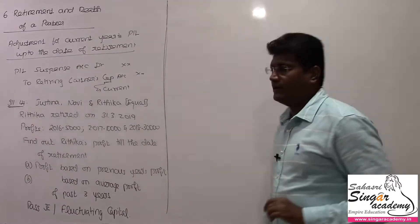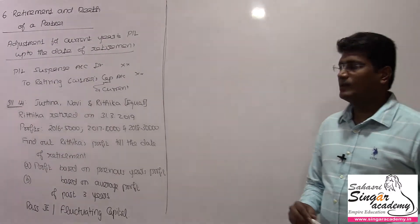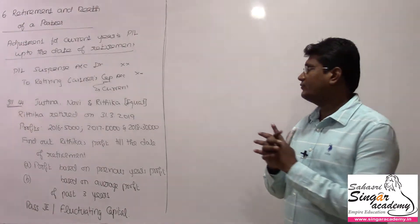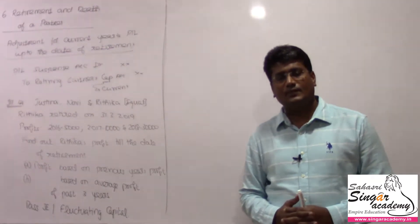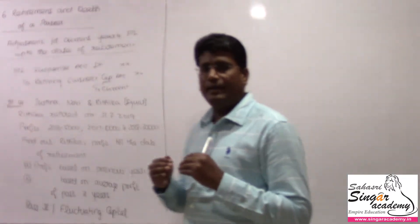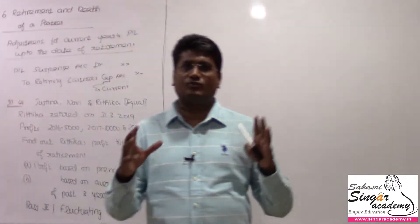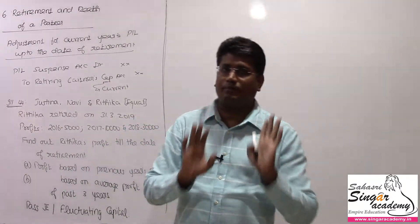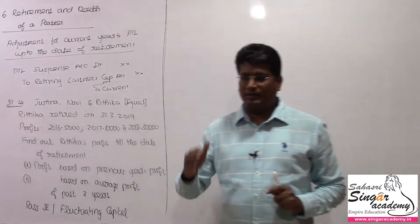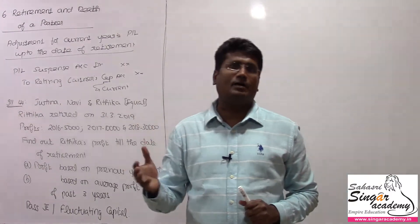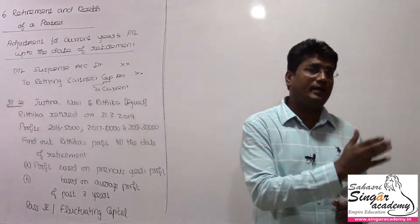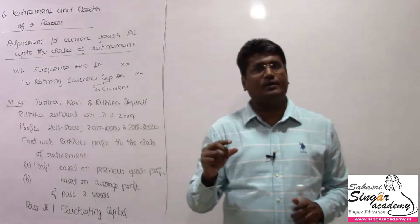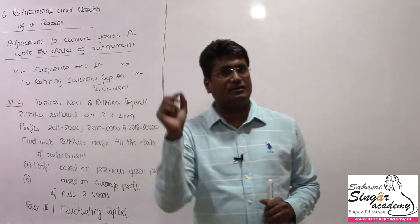Now, in retirement and death of a partner, we need adjustments for the current year's profit and loss up to the date of retirement. Exactly on the year end we have to prepare final accounts. The trouble is when we have to retire mid-year — for example, retiring in 3 or 4 months — the balance sheet figure is as on 31st March of the previous year.